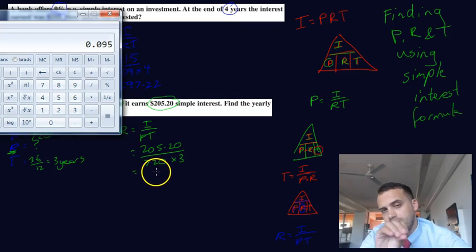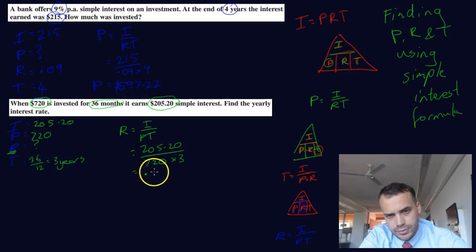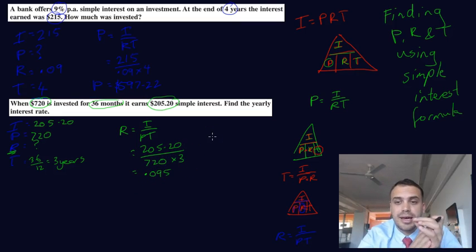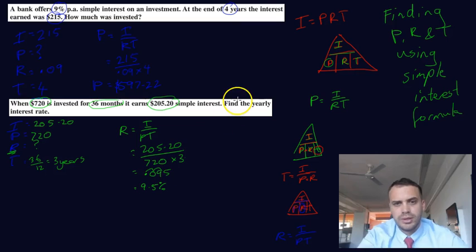Now this is an interesting one. You're going to make a mistake here, so you've got to be really careful. The answer is 0.095. But that's the rate as a decimal. Listen carefully. That's the rate as a decimal. And you want to express the rate as a percentage. So to do that, you need to move the decimal place two places to the right. 9.5%.